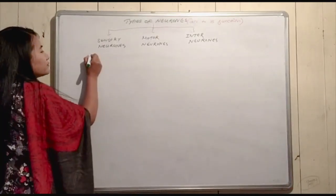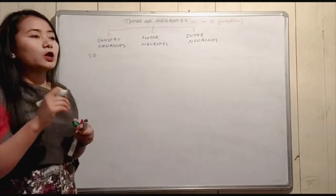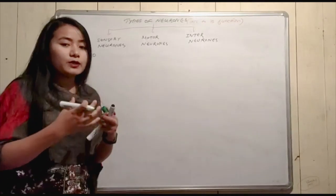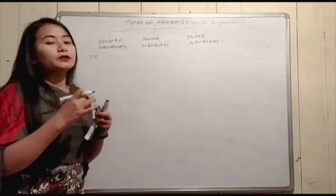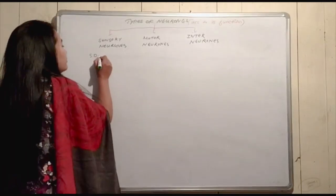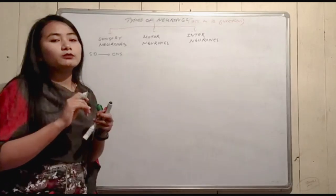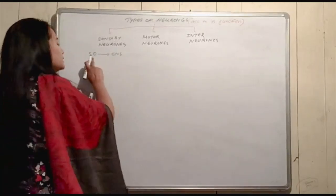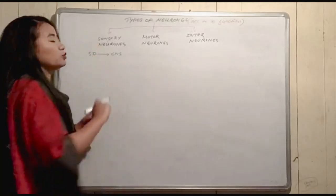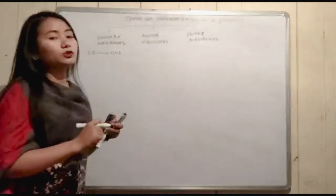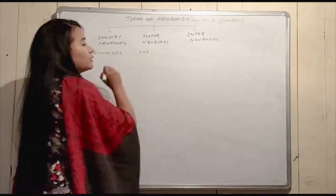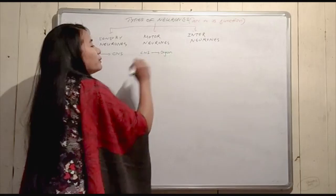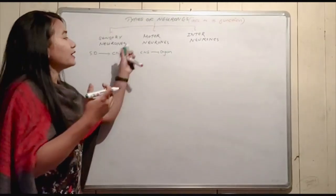The message from the sense organ or receptor organ is carried to the central nervous system — that is, the brain or spinal cord. The work of carrying messages from the sense organ to the central nervous system is done by the sensory neuron. The motor neuron, on the other hand, carries messages from the central nervous system — the brain or spinal cord — to the effector organ.